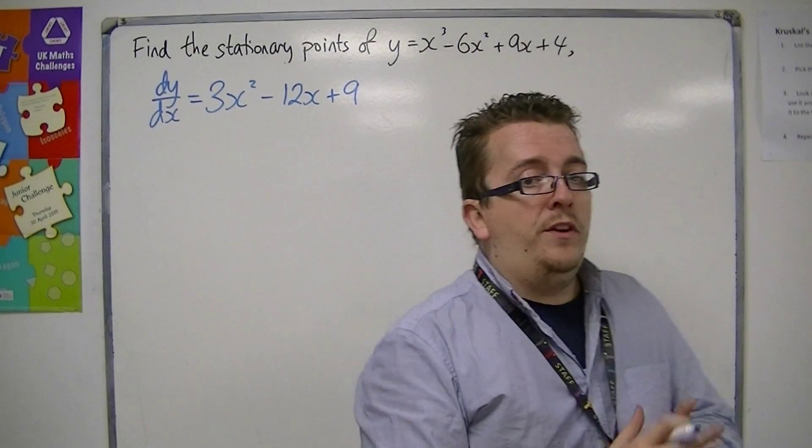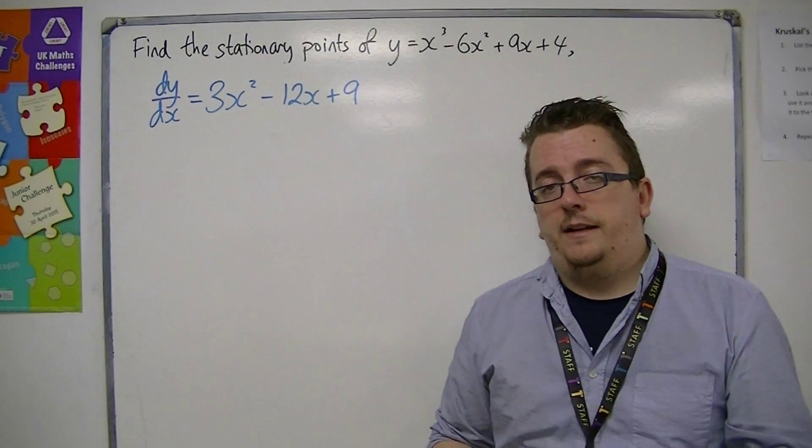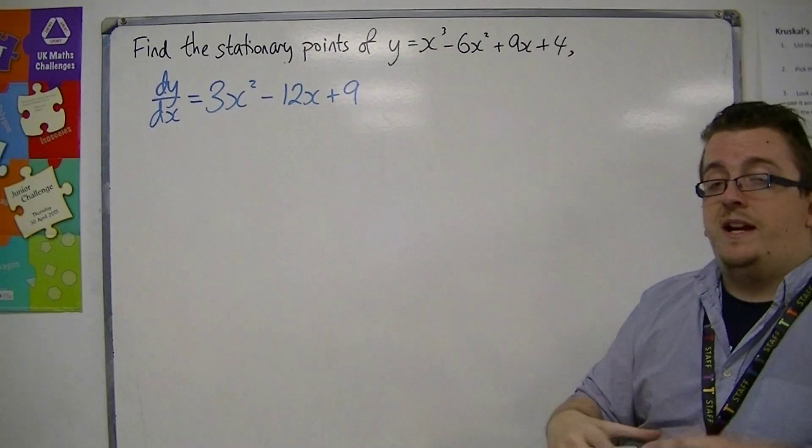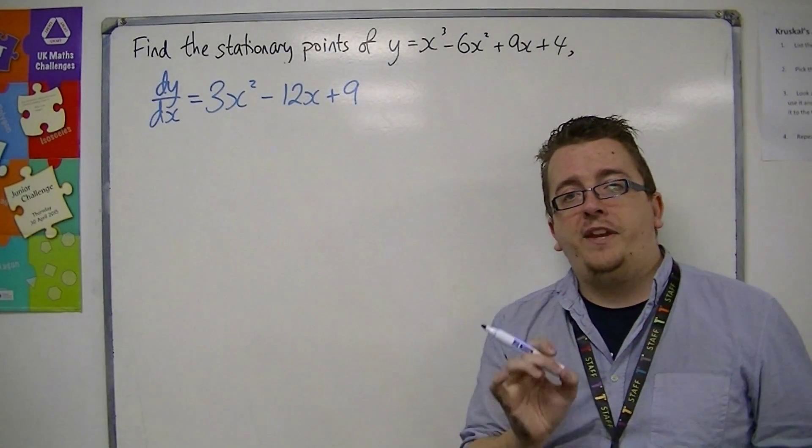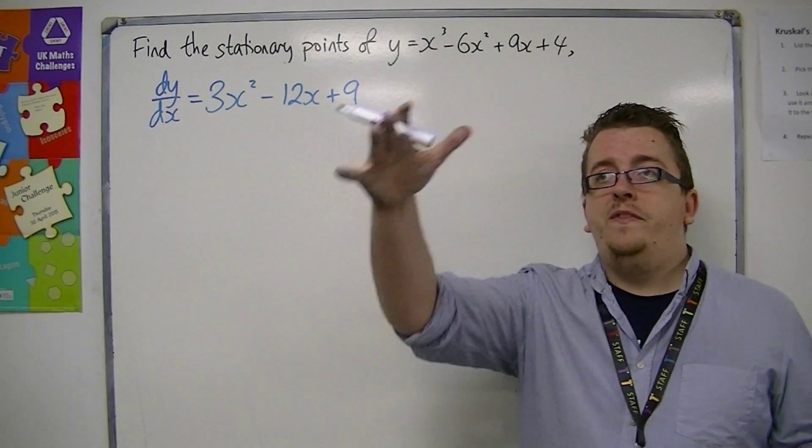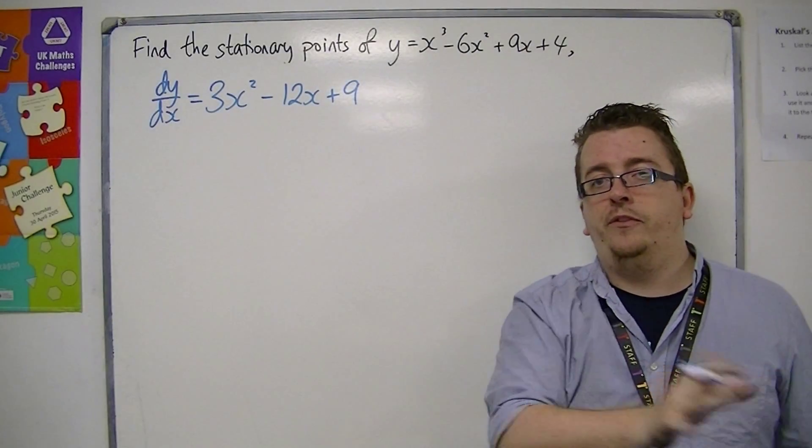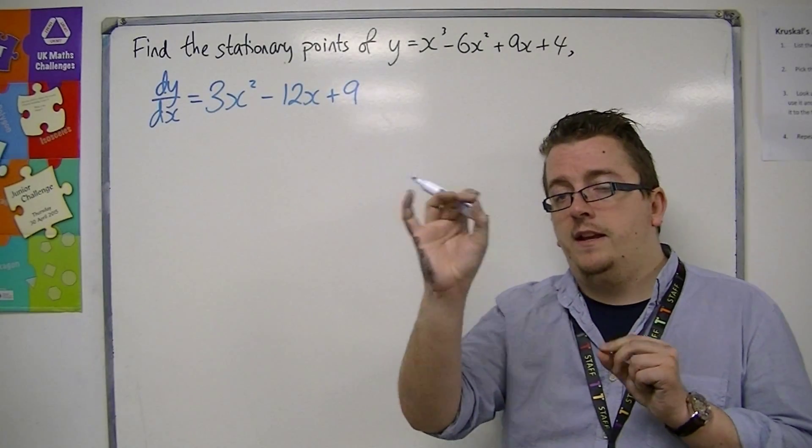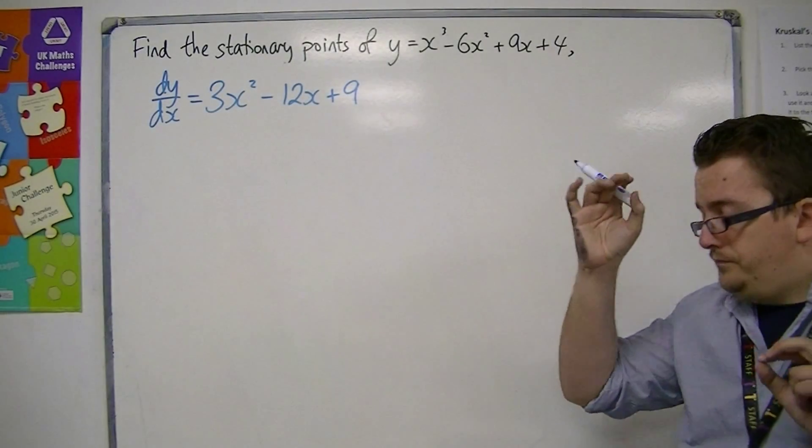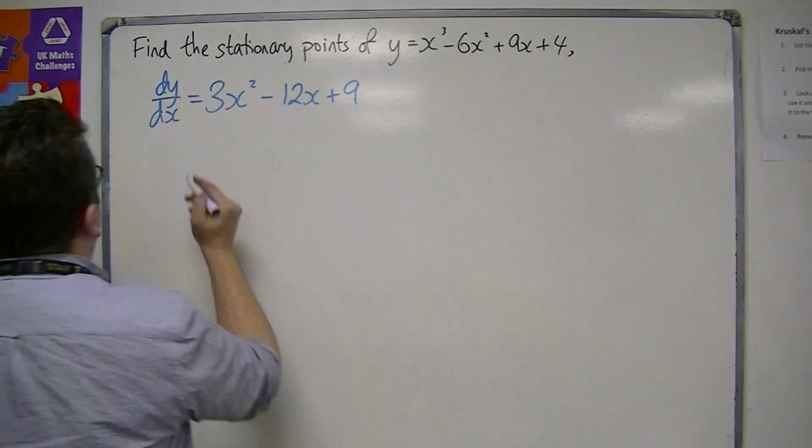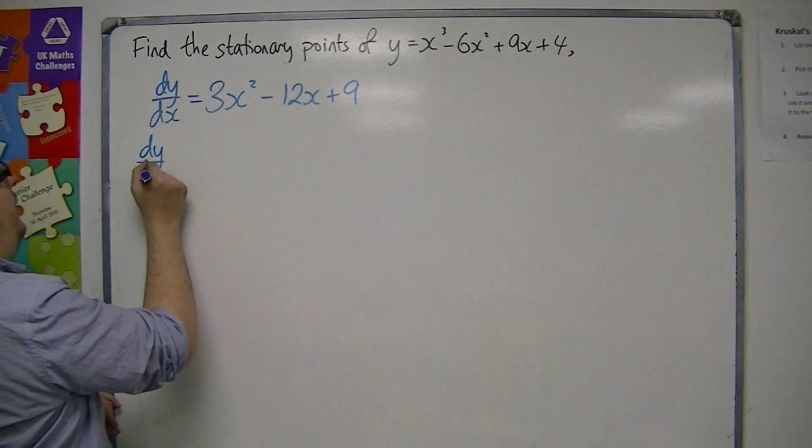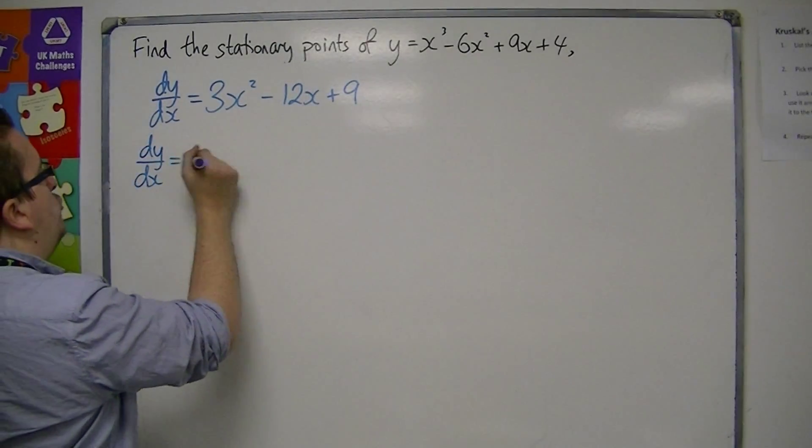Now, in a previous video, we looked at how we can identify the stationary points, because that is when the curve has its turning points - those two points in a cubic. It is when dy/dx equals 0 that we get stationary points.